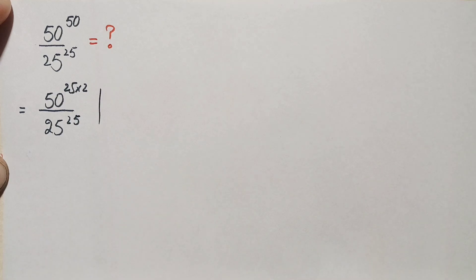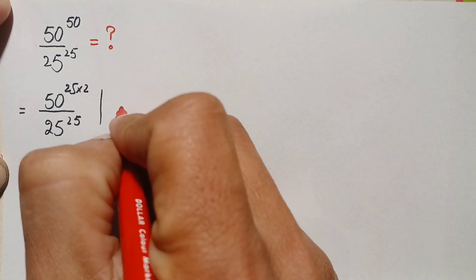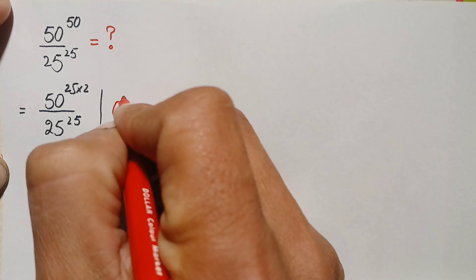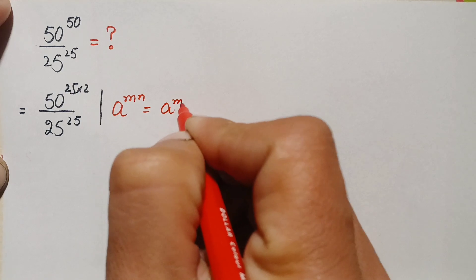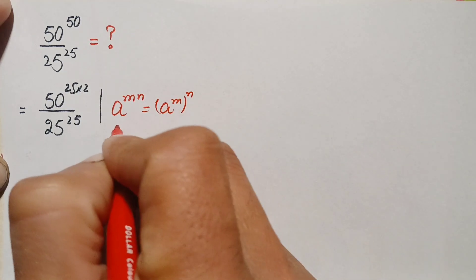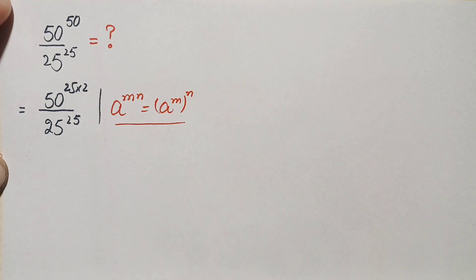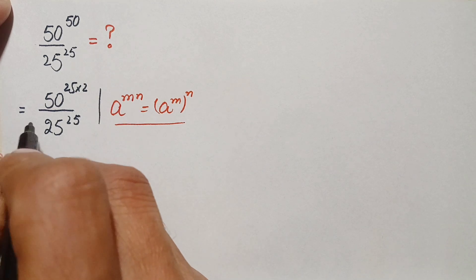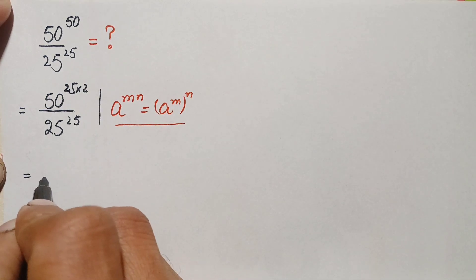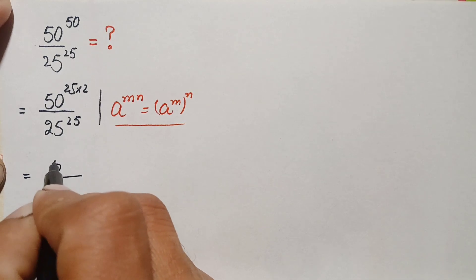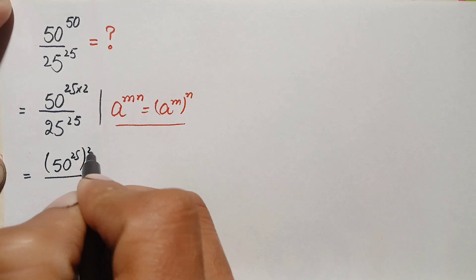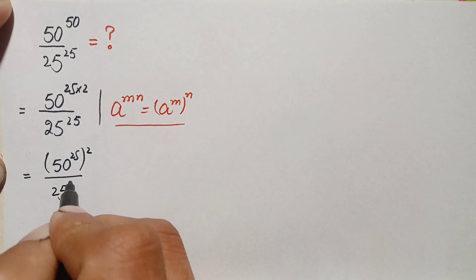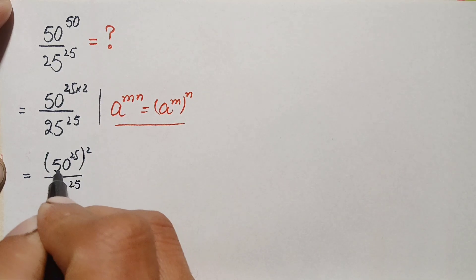In the numerator we will use an exponential identity: a raised to power m times n can also be written as a raised to power m, whole raised to power n. Using this identity, the numerator becomes 50 raised to power 25, whole raised to power 2, divided by 25 raised to power 25.